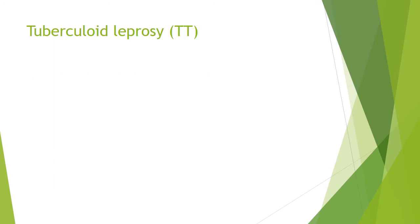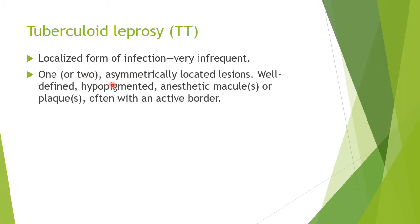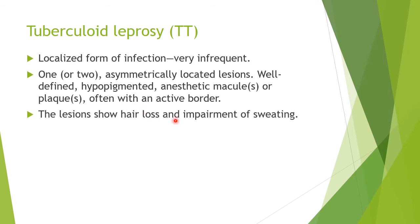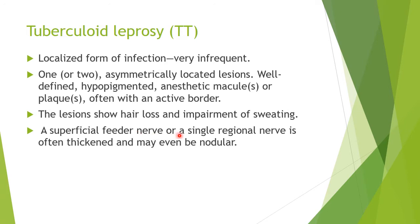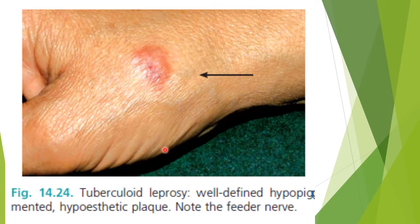Tuberculoid leprosy is a localized form of infection with one or two asymmetrically located lesions. They are always well-defined, hypopigmented, anesthetic macular plaques often with an active border. The lesions are hairless with impairment of sweating, and a superficial feeder nerve or single regional nerve is often thickened and may be nodular. This image shows a well-defined, hypopigmented, hypoesthetic plaque with a feeder nerve.